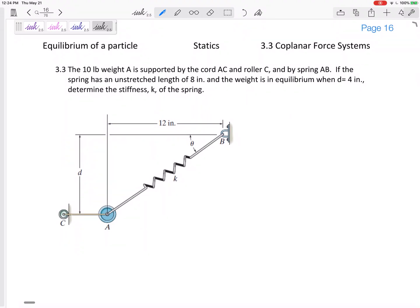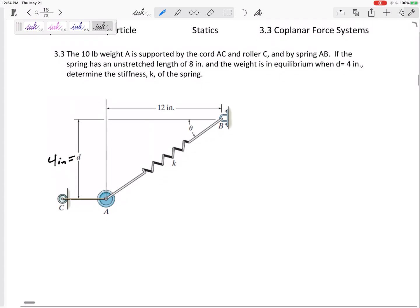All right, so what if we have right here a 10 pound weight at A, supported by cord AC and roller C, and by spring AB. The spring has an unstretched length of 8 inches and the weight is in equilibrium when D is equal to 4 inches. So this is equal to 4 inches right here. Determine the stiffness K of the spring.